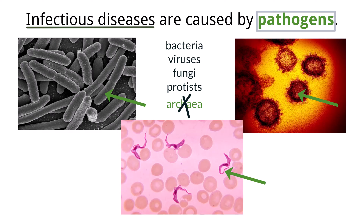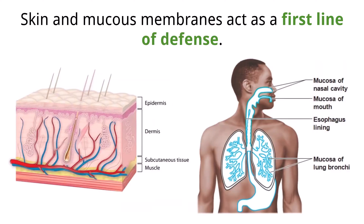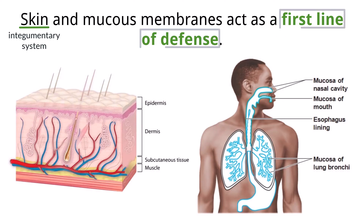We should try to take every precaution in keeping these invaders out as much as possible, as they can cause nothing but trouble to our overall health. Keeping pathogens out is our first goal, and humans do this with a very important organ called skin, which is its own body system called the integumentary system. The skin and its associated mucous membranes are the first line of defense that our body has against pathogens. If we can keep the pathogens out, there is no way they can harm us. Unfortunately this is not always the case. This first line of defense, aka the skin, acts as both a physical barrier and a chemical barrier.